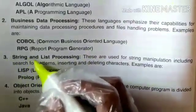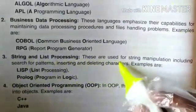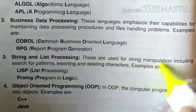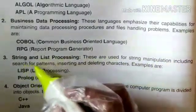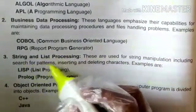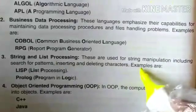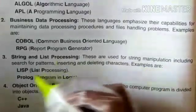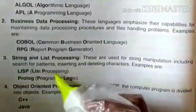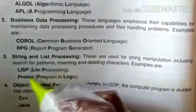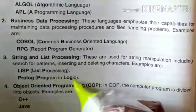Number 3: String and list processing — these are used for string manipulation including search for patterns, inserting and deleting characters. Examples are LISP (List Processing) and Prolog (Programming in Logic).